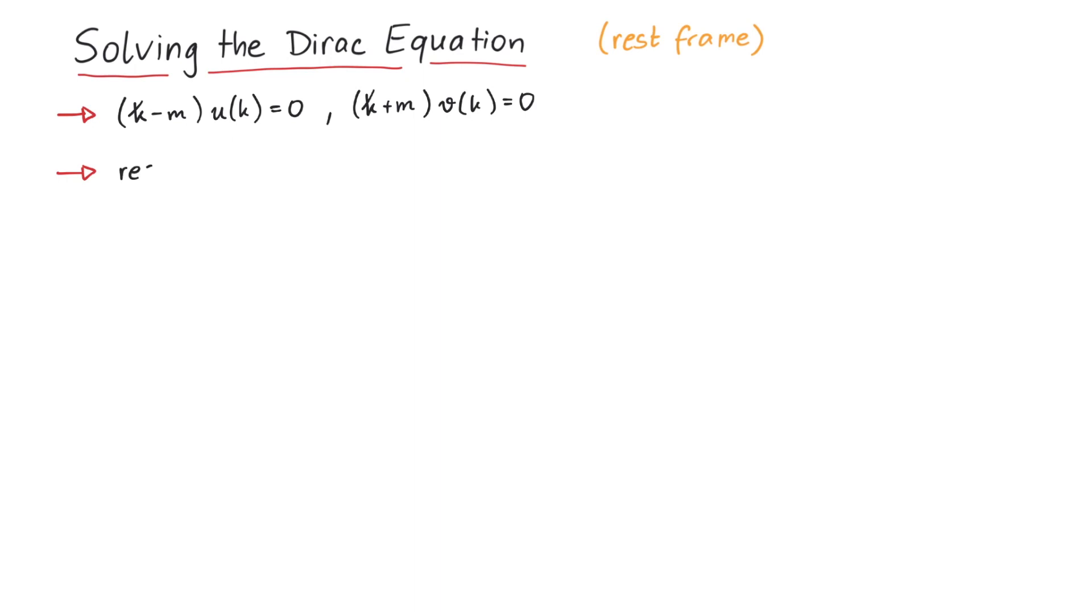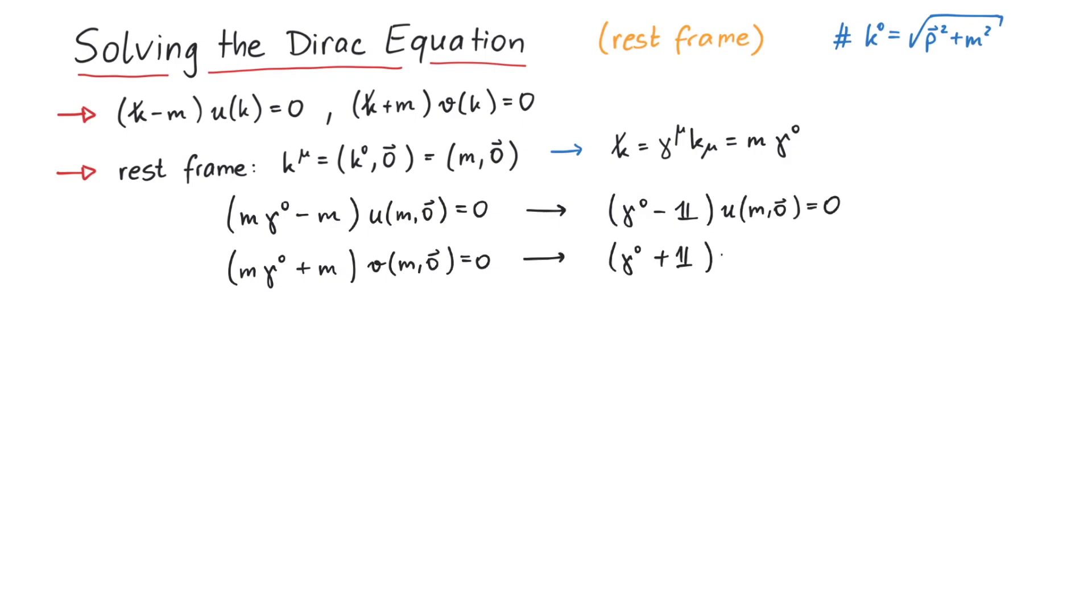To do this, we now consider the rest frame, where the momentum k is given by m, 0. This means we can write k slash simply as m times gamma 0. Now since we have 0 on the right side of the equation, we can get rid of the mass and arrive at two very simple looking equations for u and v.